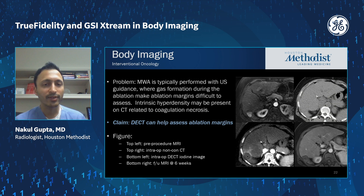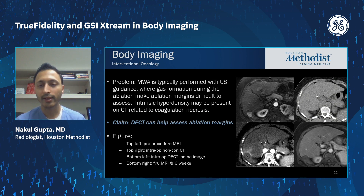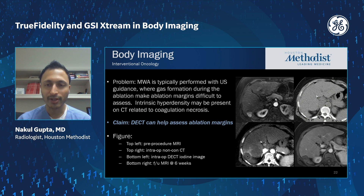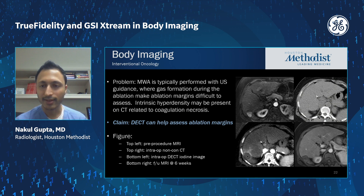We also use GSI in interventional oncology. Here, an MRI shows an enhancing HCC mass in the posterior right hepatic lobe of a cirrhotic patient planned for ablation. On unenhanced CT the lesion couldn't really be seen, so after the ablation a GSI scan was performed. The ablation cavity perfectly matched the lesion with a surrounding rim of hyperemia but without any nodular or mass-like residual tumor. Comparing with the subsequent MRI six weeks later shows a perfect match between the ablation cavity on the GSI image and the MRI.